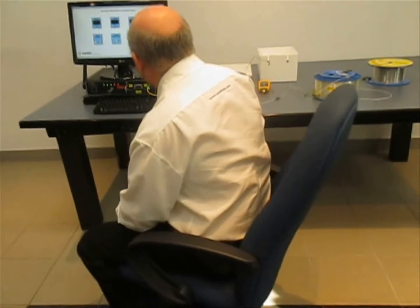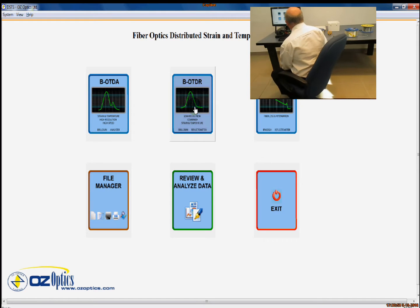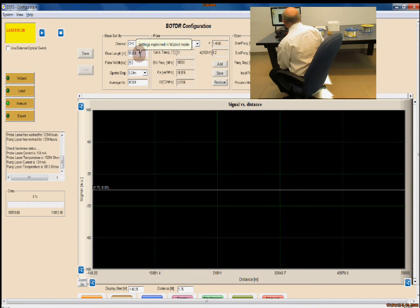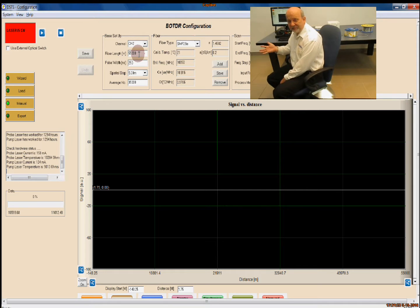Before we can begin any measurements, we first have to set up the BOTDR unit and set the parameters and take a baseline reading. To begin, we click on the BOTDR button, and this brings us to our configuration menu. We've set up the instrument to be using channel 2. The fiber length is 50 kilometers, so we've put in 55 kilometers, 55,000 meters as our fiber length, so it will record the entire length of the system, plus a little bit of extra.